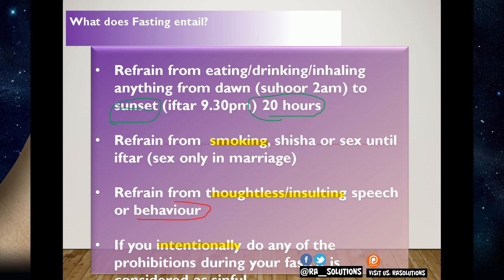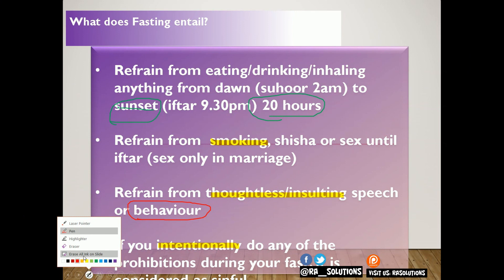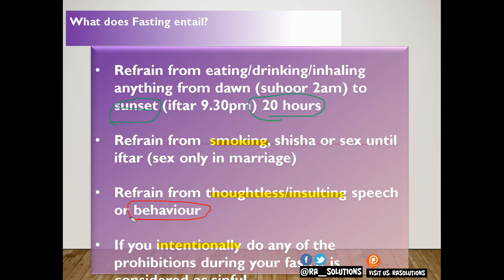Go to the bottom left-hand corner again — you can erase all ink from the slide, or you can erase individual bits that you've added. So you can erase specific items one by one. You get the idea — if you want to keep some highlighted information or some circled text.